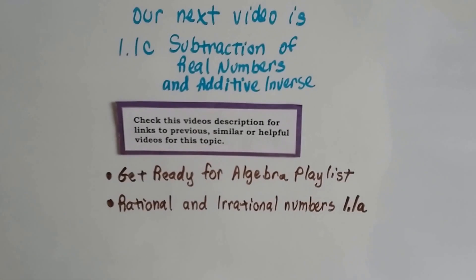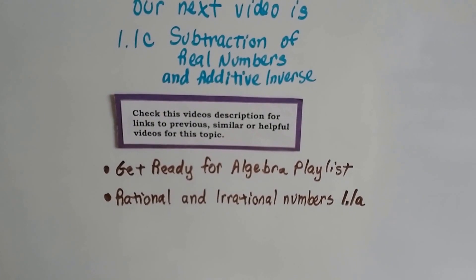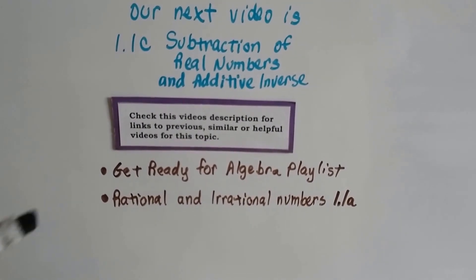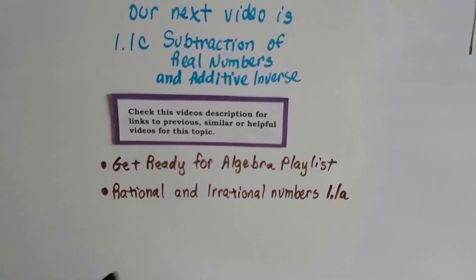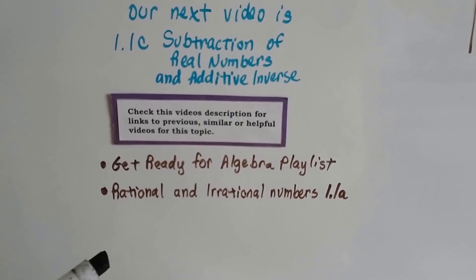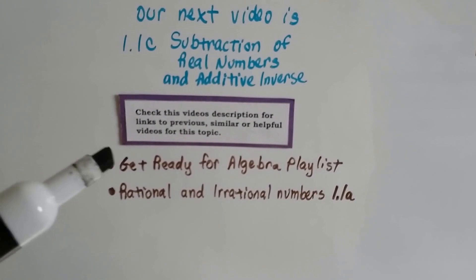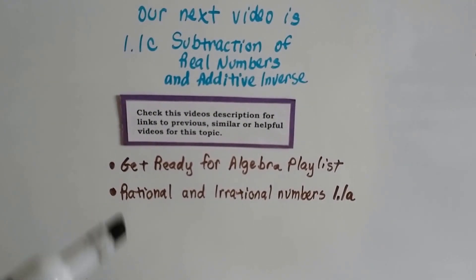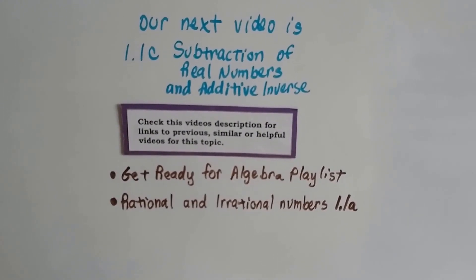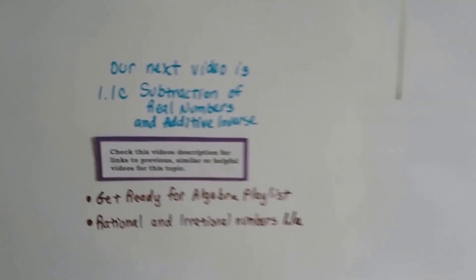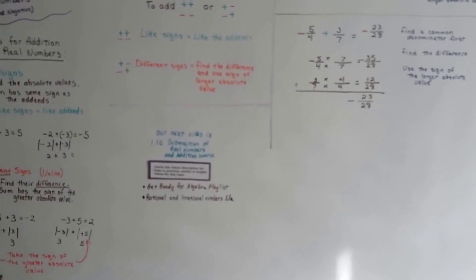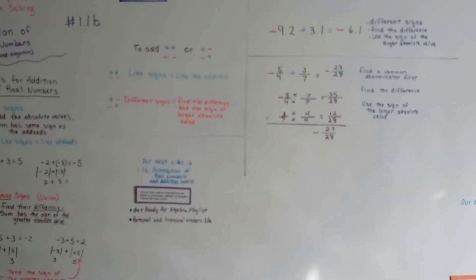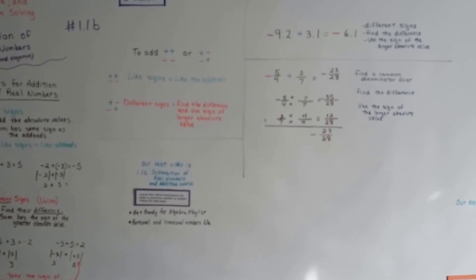Our next video is 1.1c. We're going to talk about subtraction of real numbers with these negatives and positives, and about additive inverse. If you check this video's description, you'll see a link to my Getting Ready For Algebra playlist — a reminder on reciprocals, integers, and all of that to get your brain back in gear. There's also a link to rational and irrational numbers, 1.1a, the video before this one. I'll see you next video. Bye!